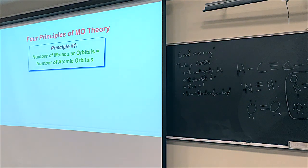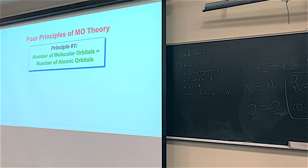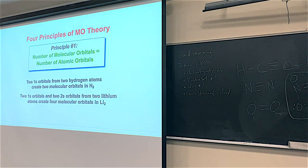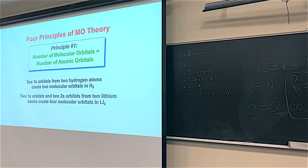There are four principles of molecular orbital theory. The first: chemistry follows conservation of energy. If you have four atomic orbitals going into a molecule, you'll end up with four molecular orbitals — you can't create or destroy any orbitals. So if you have two 1S orbitals making H2, you get two molecular orbitals. For dilithium, each lithium has 1S and 2S — two types of atomic orbitals, two lithiums, so four total atomic orbitals make four molecular orbitals. For oxygen, with 1S2, 2S2, 2P4, there are five atomic orbitals per oxygen atom. Making O2 means 5 × 2 = 10 molecular orbitals total.